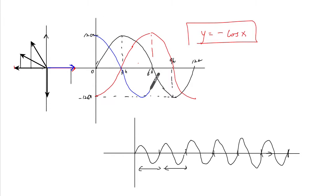If you start there we're gonna get the positive cosine curve. So the blue graph is y equals cosine of x.